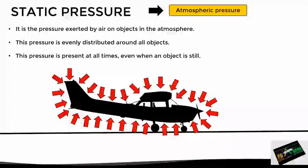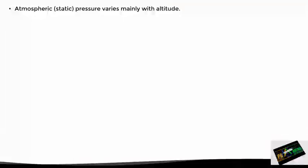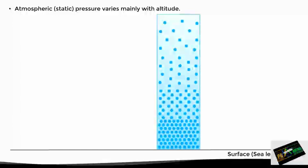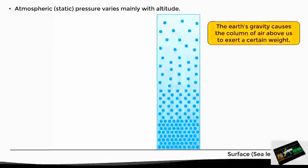Having seen these basic characteristics, we could ask ourselves: what does the static pressure depend on? Well, the atmospheric pressure, or static pressure, varies mainly with altitude. Here we have the surface, which in this case we are going to assume is at sea level, and here we have a column of air above it that spreads up into the atmosphere. As we can see, the air molecules are much closer together at the bottom near the surface, while as we go up they separate more and more. Air is made of matter, and matter has weight, so the gravity of the earth makes the column of air above us exert a certain weight, which causes the particles underneath to compress more and stay closer together.